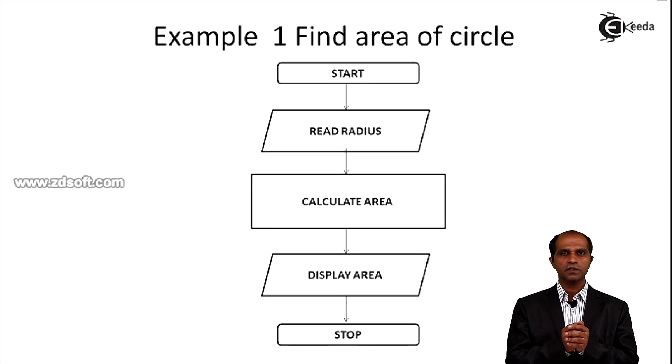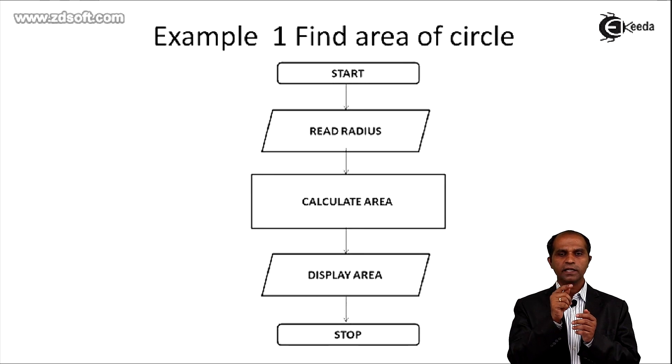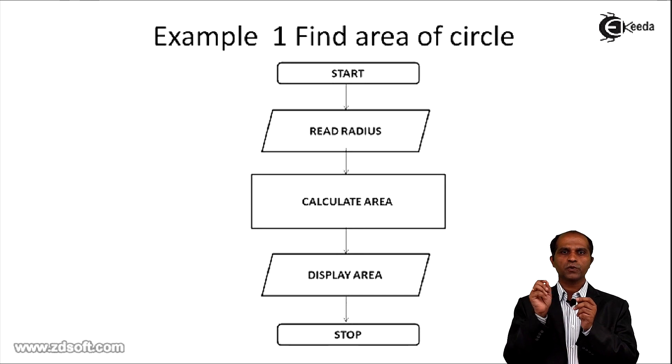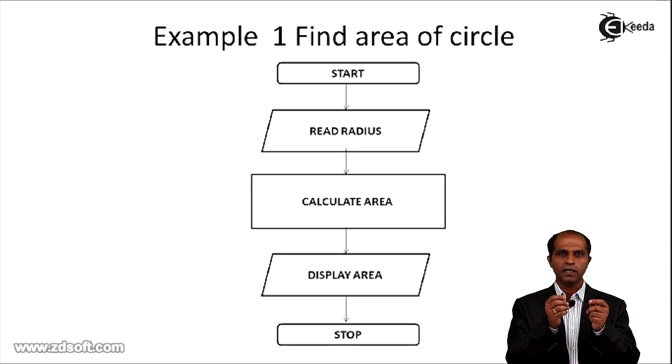If I'm using identifier for all these instances, then probably the flowchart might change this way. Start, read radius bracket r, and then I can say calculate area A equals to 3.14 asterisk r asterisk r. Or I can say calculate area A equals to pi r square, so where A is an identifier which will store the result of pi r square into it. And then I can say display area A.